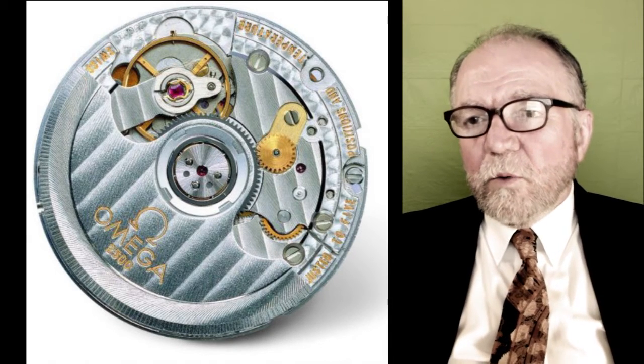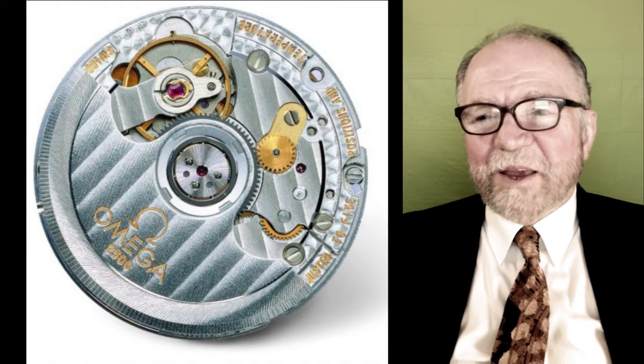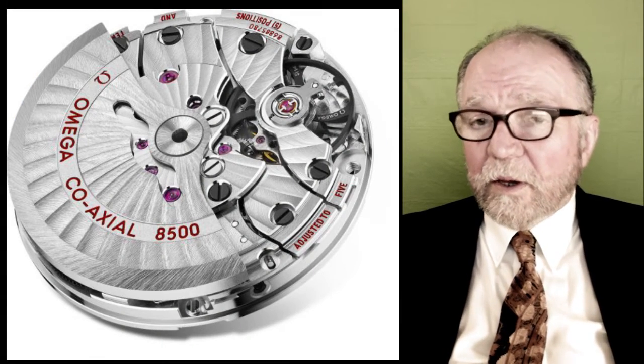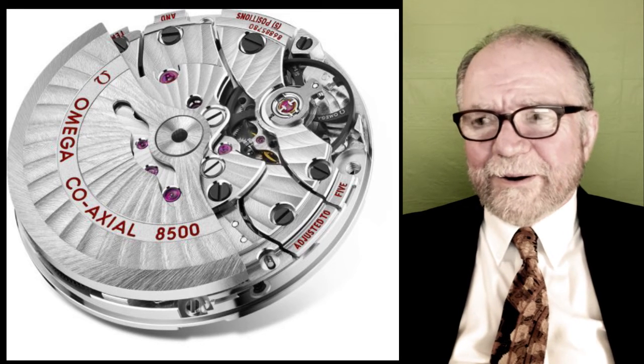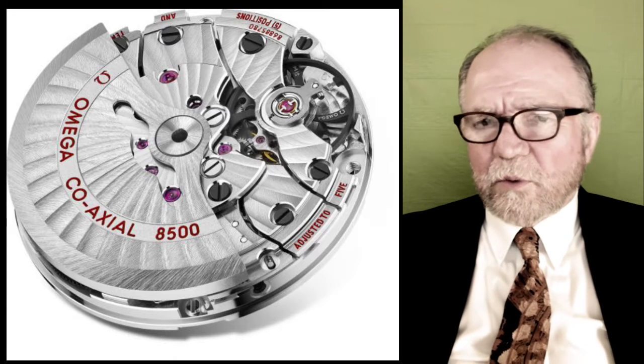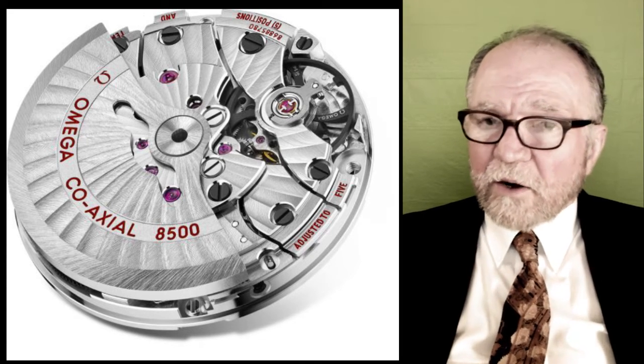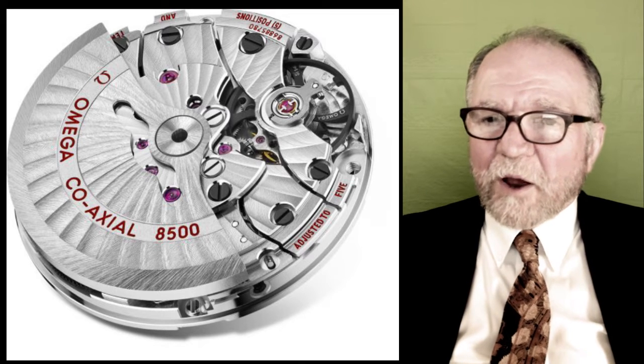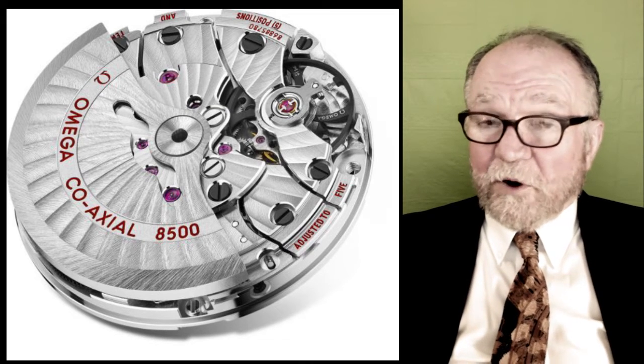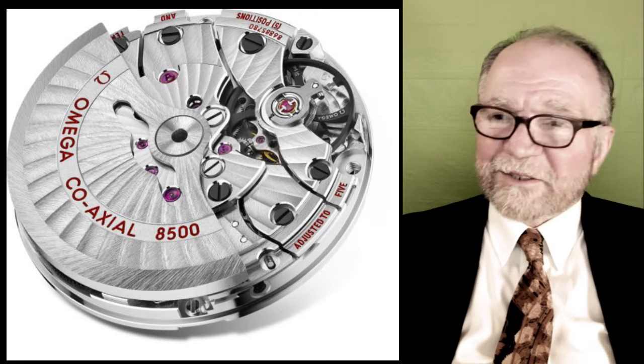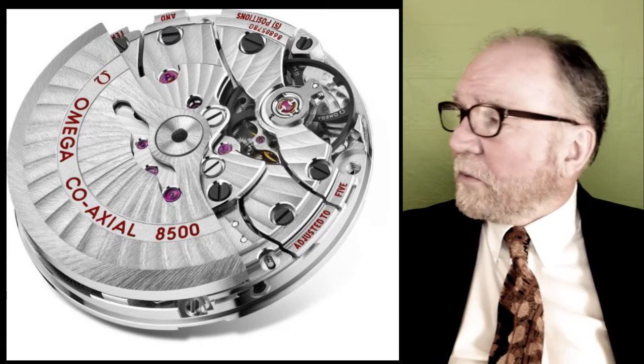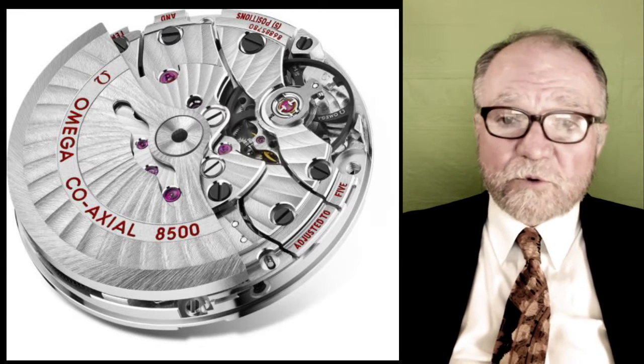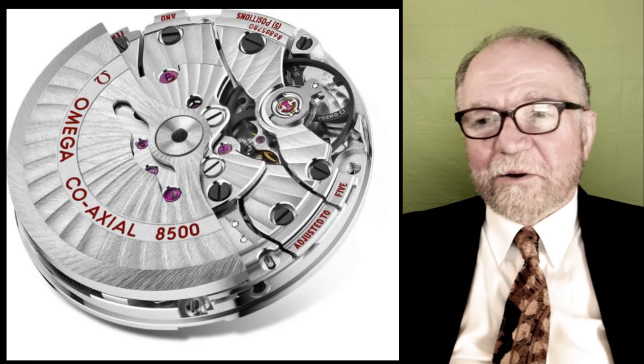In order to beef it up and make it better, Omega came out later with the Omega coaxial 8500. At first they had them on Seamaster and a lot of other watches. If you get an Omega, boy, get one with a coaxial. There are some around without the coaxial, and if there are, they shouldn't be charging very much for them. Even with an ETA in it, your coaxial escapement is going to improve the performance of the watch. It should not require as many trips to the watchmaker for cleaning and oiling.